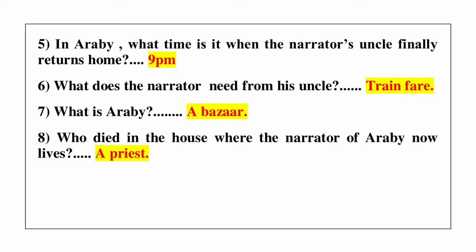Question number 7: what is Arabi? Answer is it is a buzzer. Question number 8: who died in the house where the narrator of Arabi now lives? Answer is a priest.